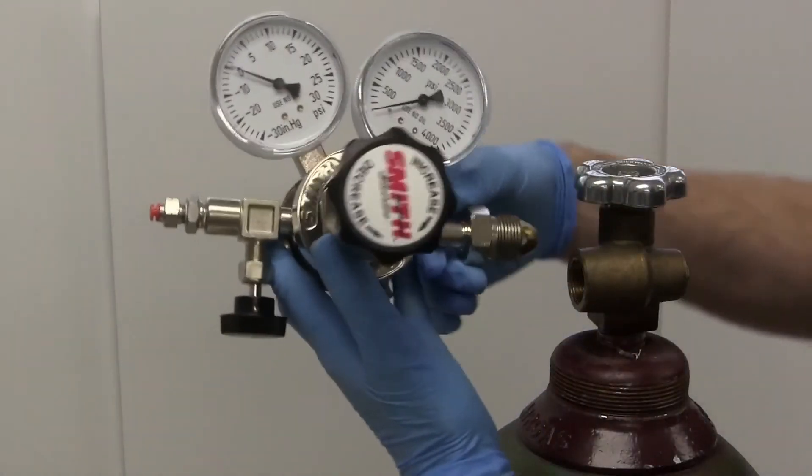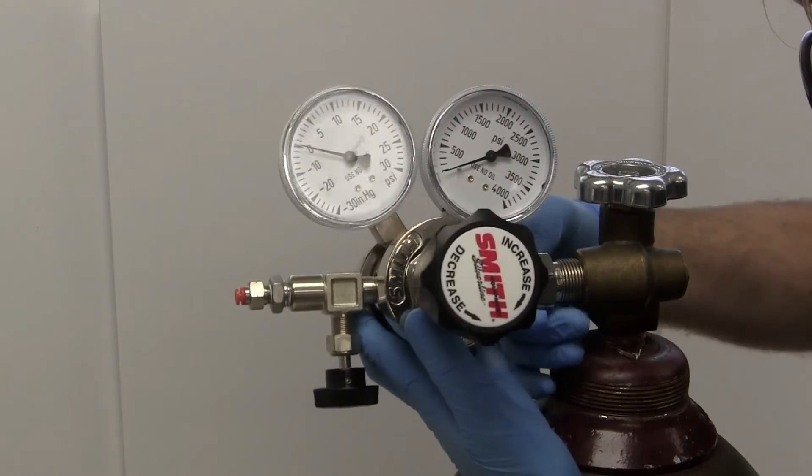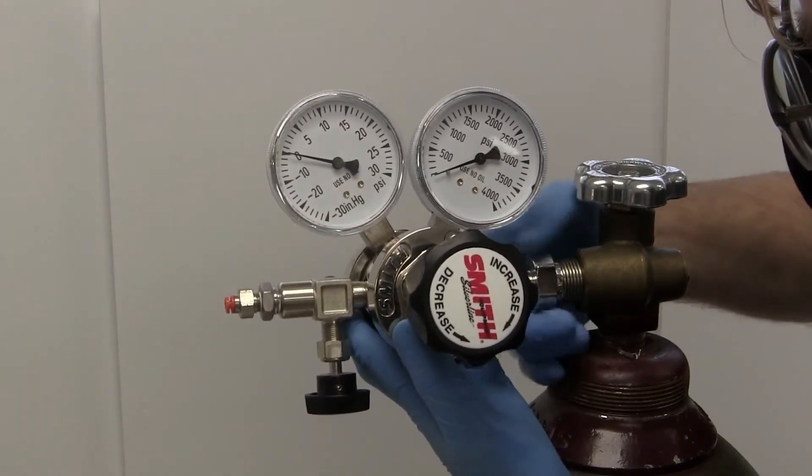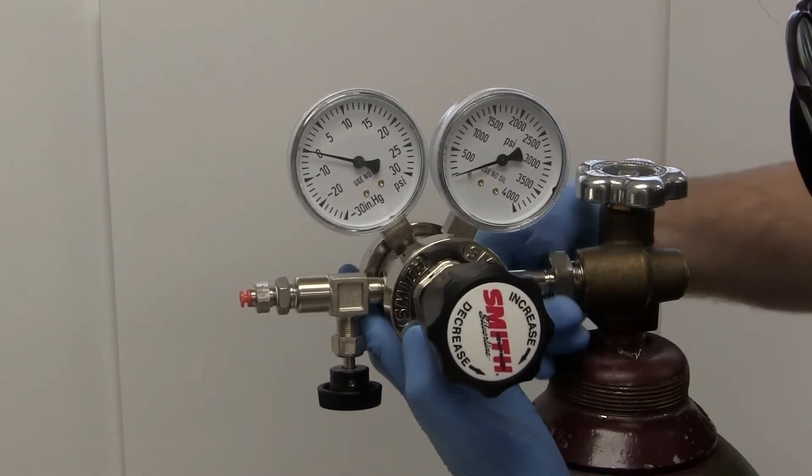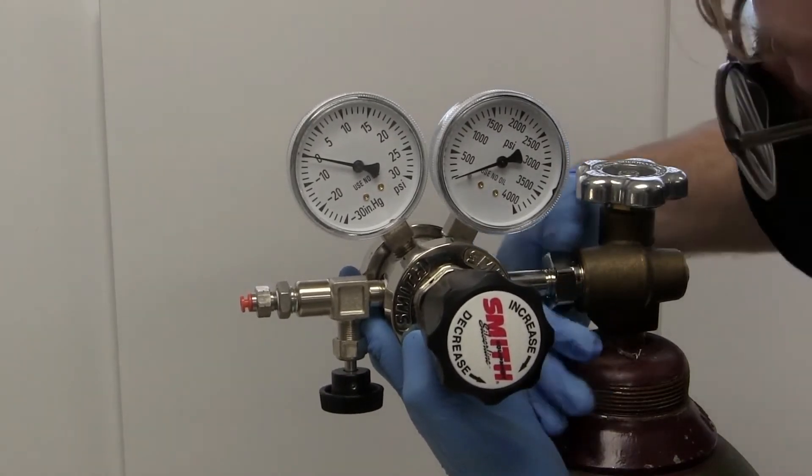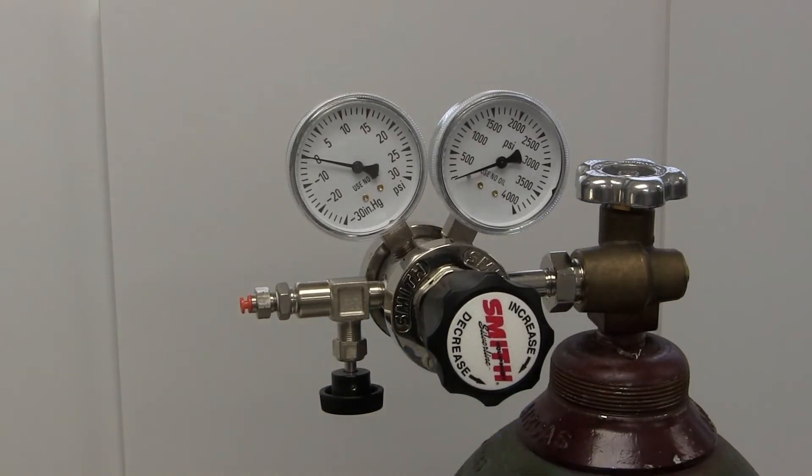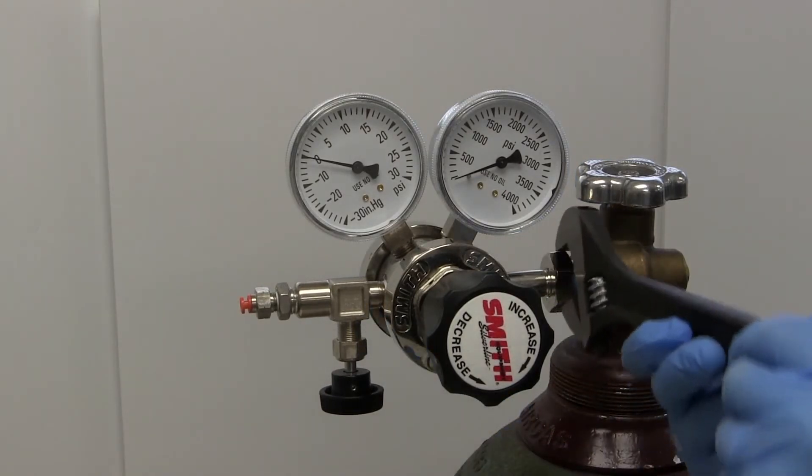Thread the regulator onto the cylinder such that the dials can be viewed easily. Use an adjustable 10-inch wrench to tighten the coupling.